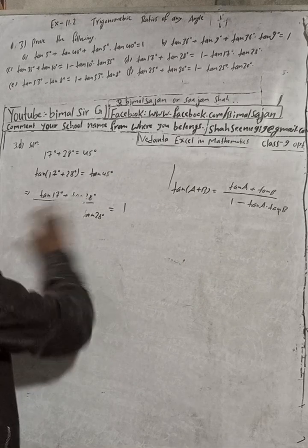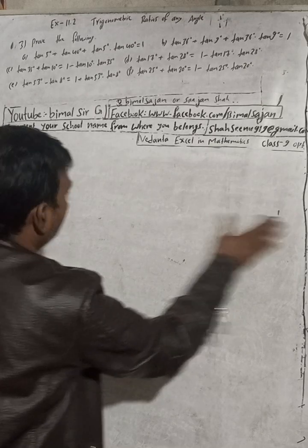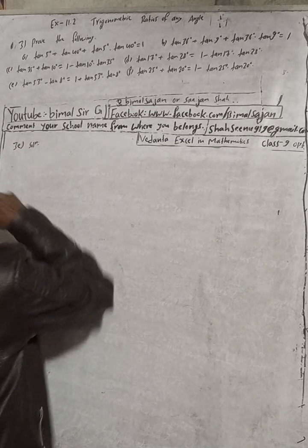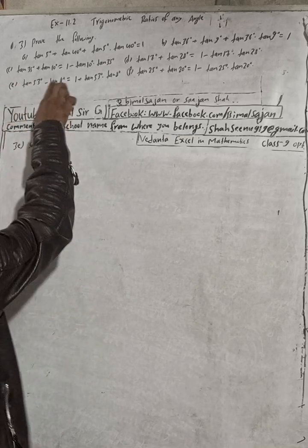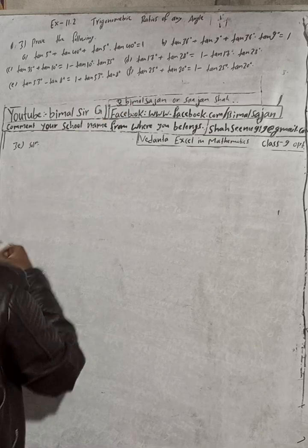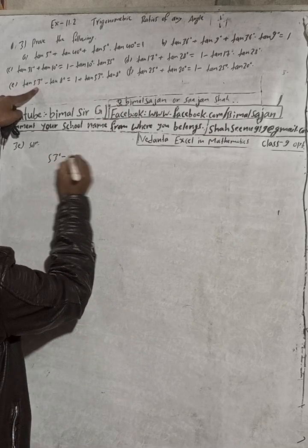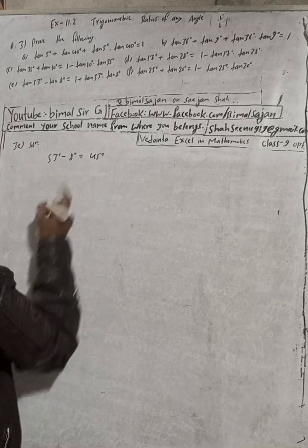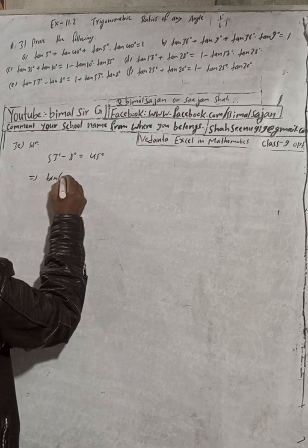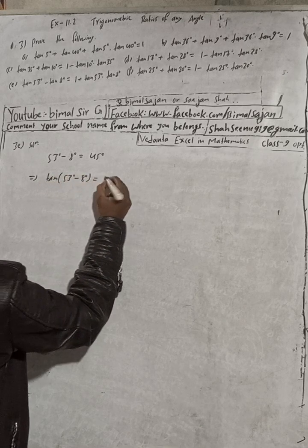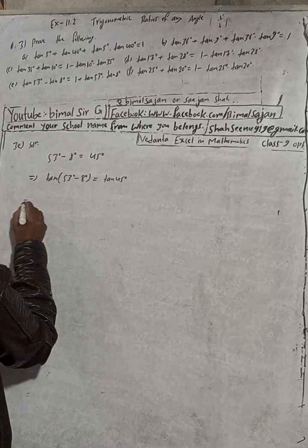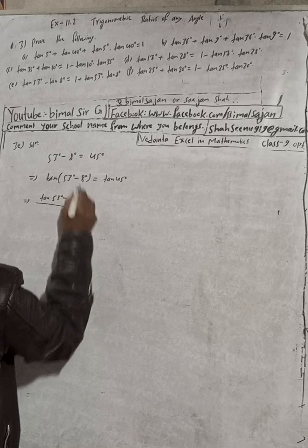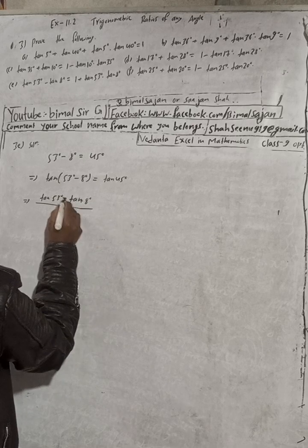Part E: Prove tan53° − tan8° = 1 + tan53°·tan8°. We see 53° − 8° = 45°. Take tan both sides: tan(53° − 8°) = tan45°. Apply the tan(A − B) formula: (tanA − tanB) / (1 + tanA·tanB) = tan45° = 1.